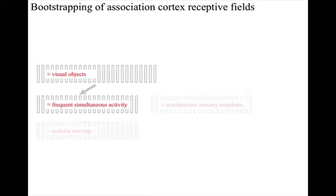Some columns in the frequent simultaneous activity area have lots of initial inputs from a randomly selected range of columns in the discriminates visual objects area.